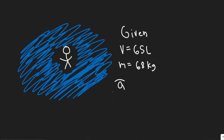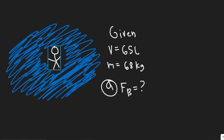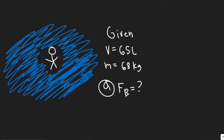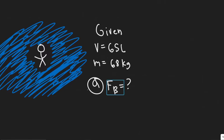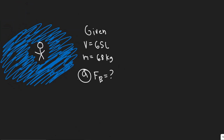In Part A we're trying to answer what the buoyant force is — what buoyant force is going to be acting on the diver. In Part B we're trying to determine whether she's going to sink or not. So is this buoyant force going to be greater than her weight or less? If it's less she will sink; if it's greater she's going to float upwards. So the first thing we have to do is find the buoyant force.